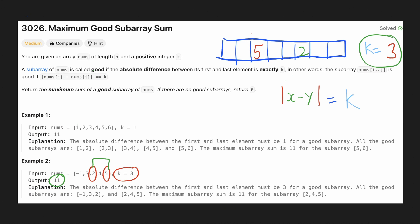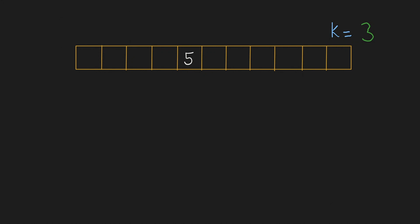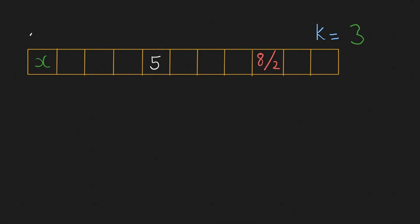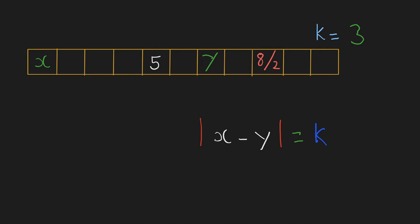Let's try to come up with an intuitive solution. First, let's understand the brute force approach. For a value like 5 with k equal to 3, the valid corner values are either 2 or 8. So if we encounter 8 or 2 to the right of 5, we find the sum of that subarray and maximize our result. We start from each index and find all subarrays ending at a valid value such that the difference is k. This requires 2 loops and the time complexity would be O(n²).